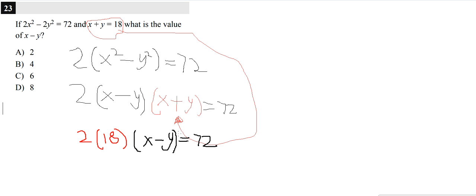So 18 times 2 is 36. So we have 36 times x minus y is equal to 72.